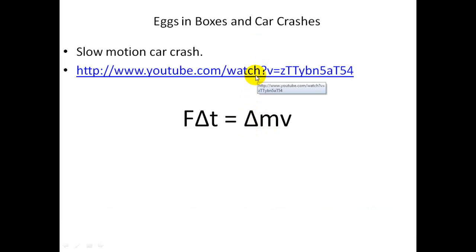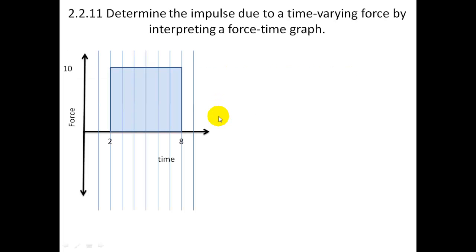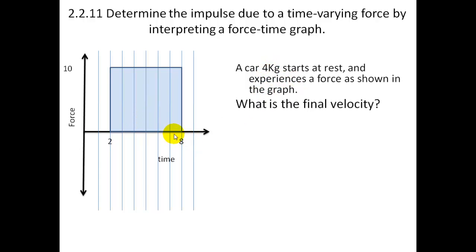This is a YouTube clip you can watch. We have to determine the impulse due to time-varying force by interpreting a force-time graph. This is the force, 10 newtons, acting over 6 seconds. We know the mass is 4 kilograms, and this is the graph that shows it. What is the final velocity?